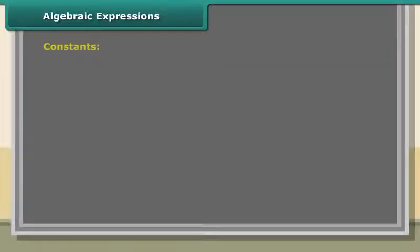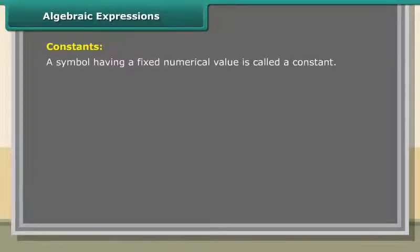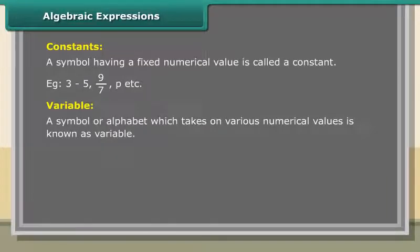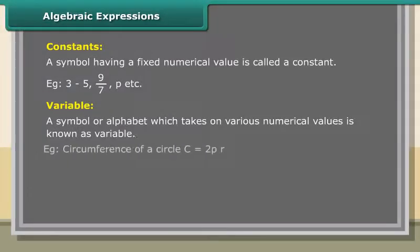Algebraic expressions: A symbol having a fixed numerical value is called a constant. Examples: 3, -5, 9/7, π, etc. A symbol or alphabet which takes on various numerical values is known as a variable. Example: the circumference